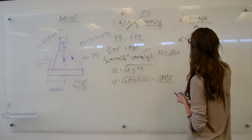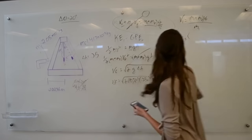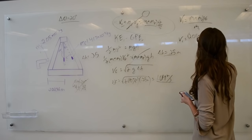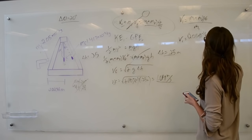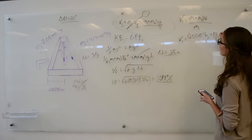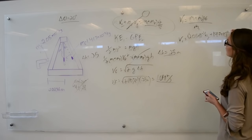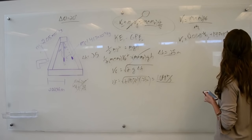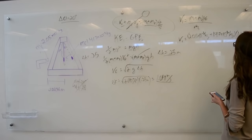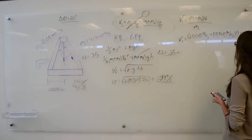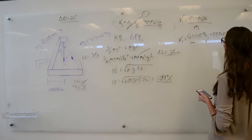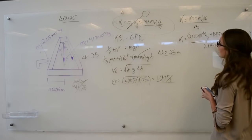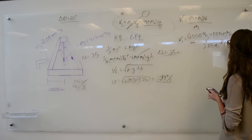Then we're just plugging numbers. So V1 equals, we have 4.05 times 10 to the negative 2 kilograms plus 1.417 times 10 to the negative 2 kilograms times the final velocity of 1.04 meters per second, all divided by M1 which is 2.05 times 10 to the negative 4 kilograms.